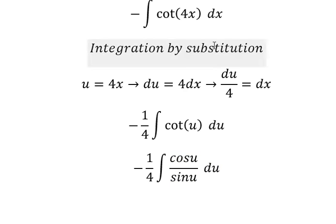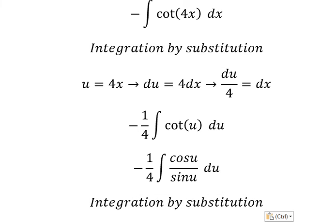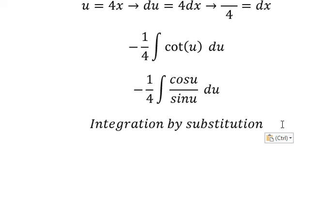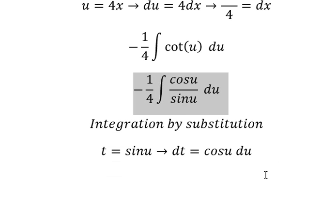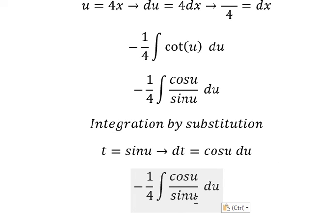Next we use integration by substitution again. I will put t = sin u. We take the first derivative on both sides and we have dt = cos u du. We substitute sin u by t and cos u du by dt.